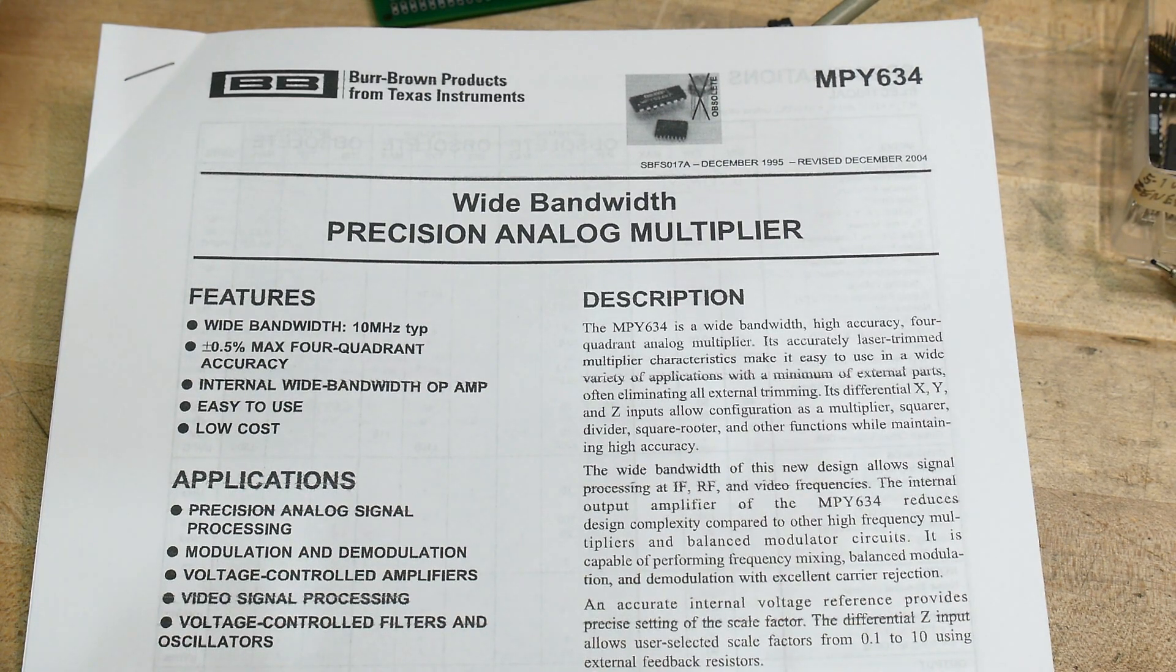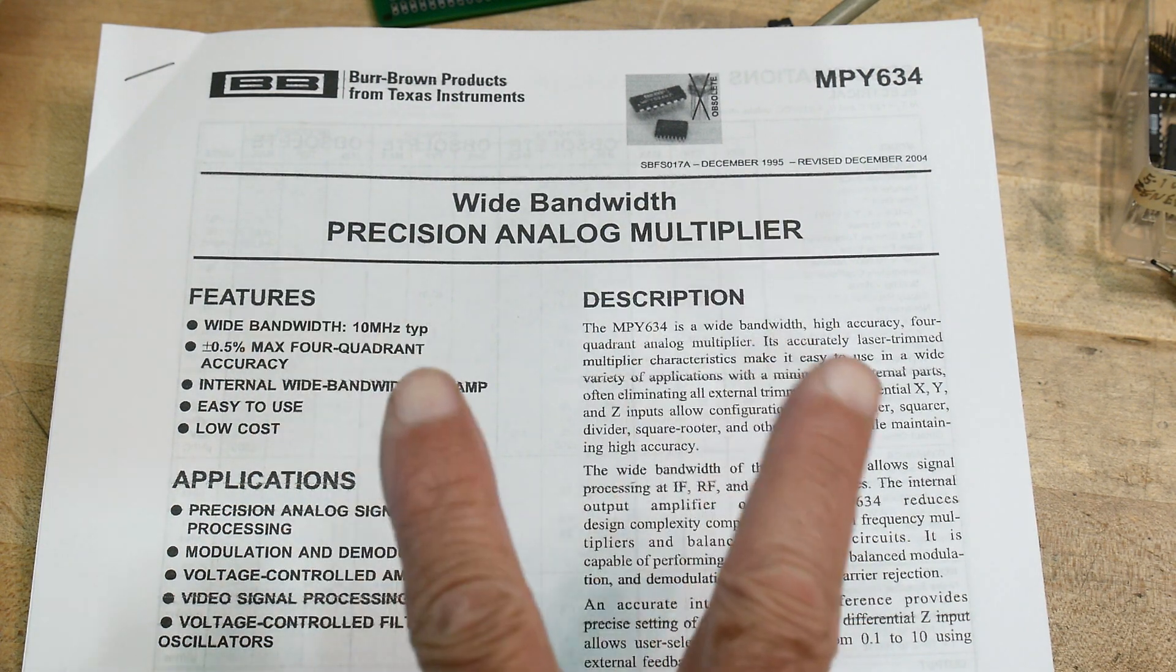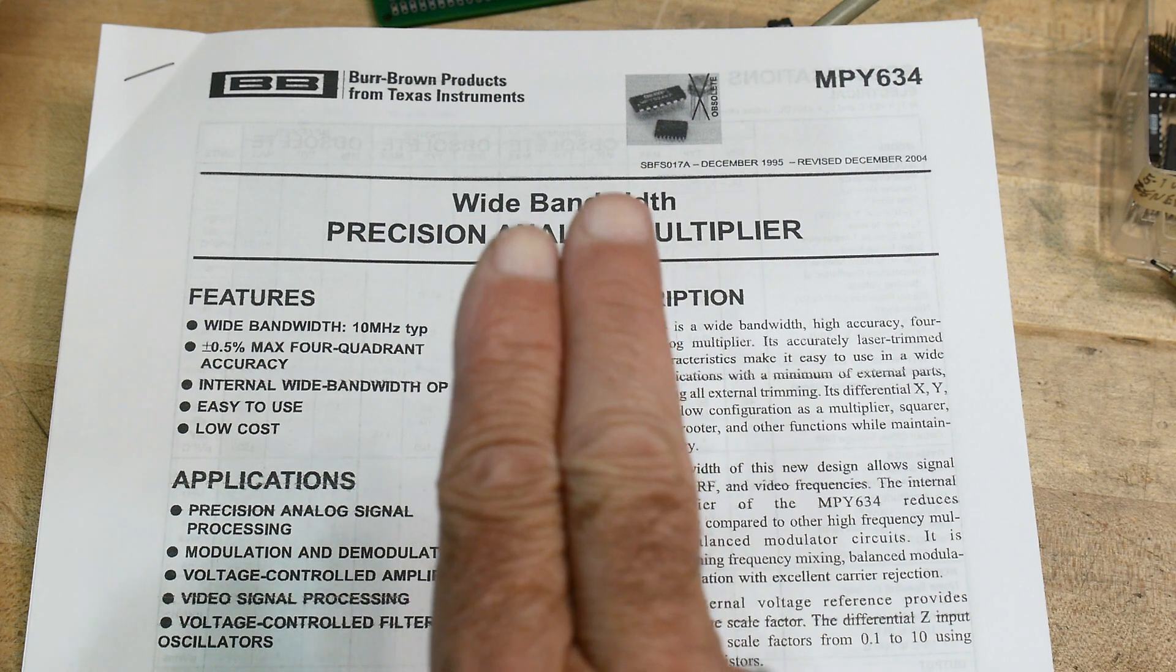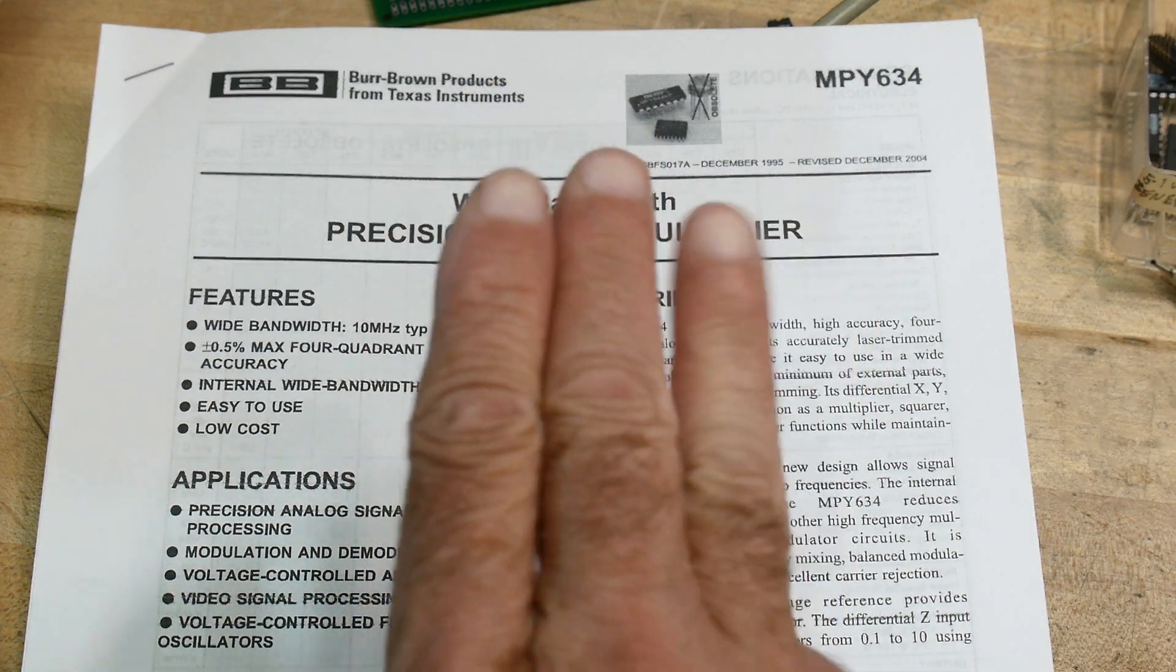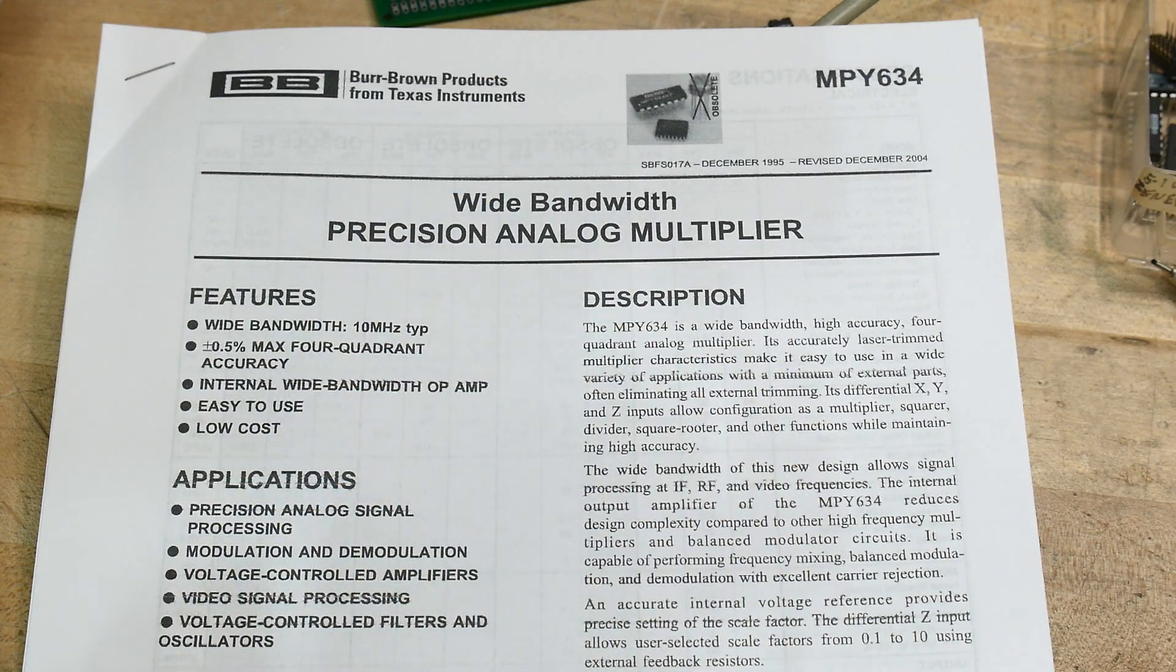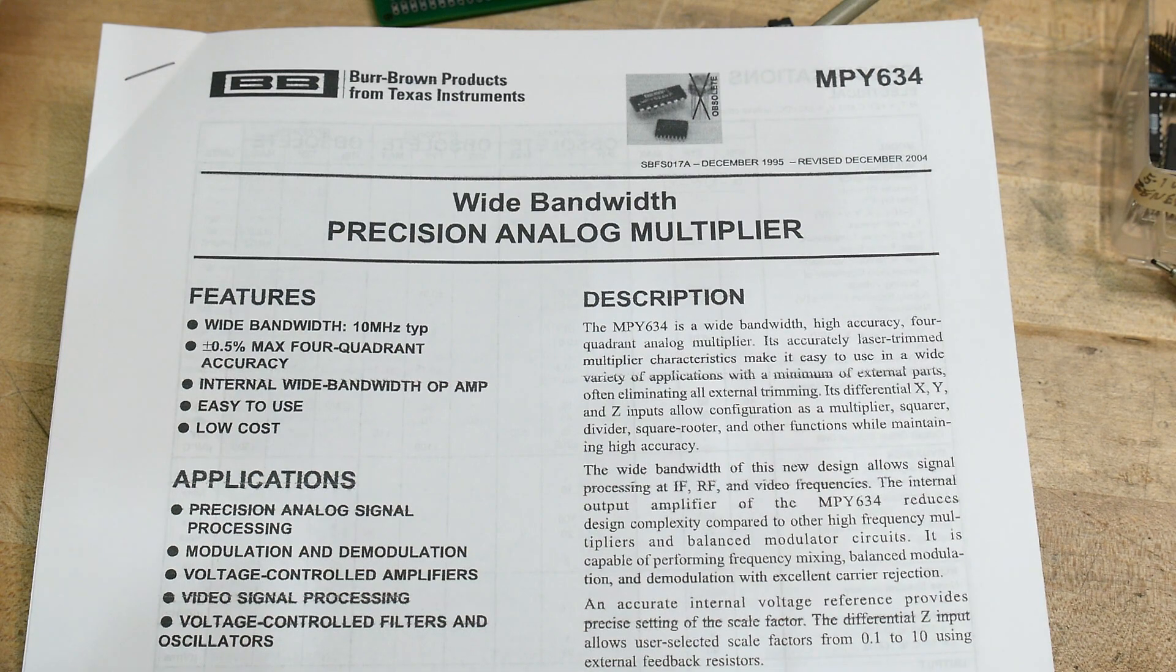So multipliers are very interesting. They're kind of like mixers a little bit, but they basically take two values and multiply them together. So if one is A, one is B, you get A times B. And then you can input a C, which is an addition. So it's A times B plus C. And that's what this thing can do. It can do mathematics. A times B plus C.